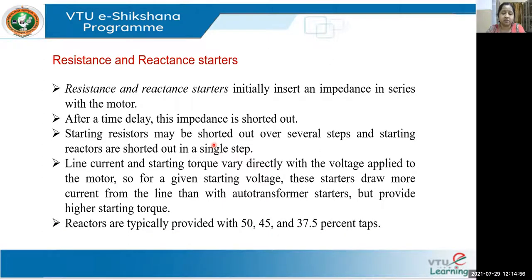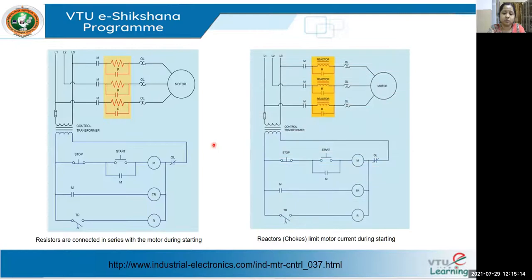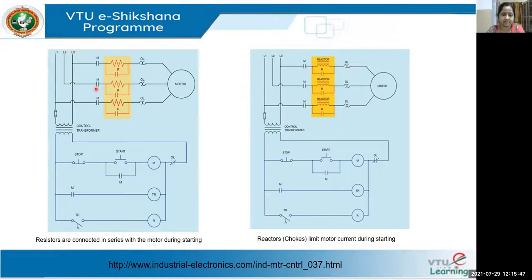There are two circuits displayed on screen — a resistance starter and a reactance starter. In this circuit, you can see your motor with resistances connected in series. The elements that look like capacitors are actually contactors. The contactor M is the main contactor, and contactor R is for the resistances connected in series with the motor and the line. The setup also has a stop button and a start button.